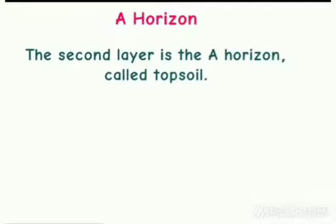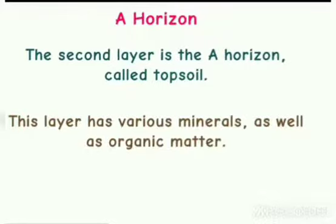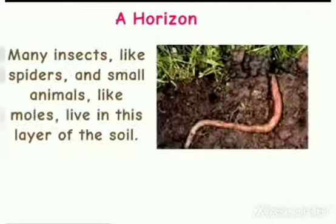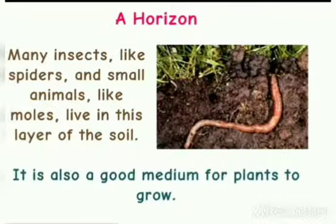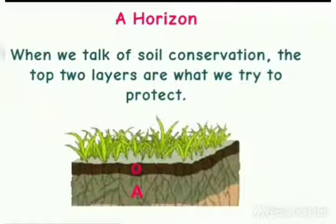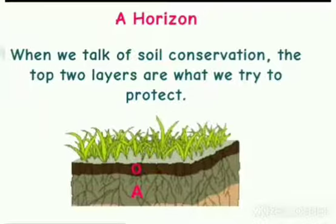The O horizon is usually dark brown and is high in nutrients because it contains humus. The second layer is the A horizon, called topsoil. This layer has various minerals as well as organic matter. Many insects like spiders and small animals like moles live in this layer. It is also a good medium for plants to grow. When we talk of soil conservation, the top two layers are what we try to protect.